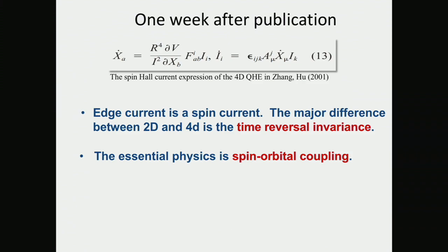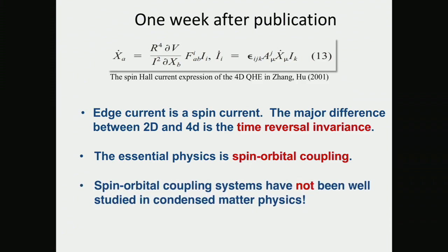The second sentence also blew my mind: if you want to realize this model, you have to go to spin-orbit coupled systems. The essence of this model is really spin-orbital coupling. The third sentence — which even today I feel shows incredibly great insight — was that spin-orbit coupled systems have not been well studied. That was the direction he wanted to go, but at the time I didn't understand at all.